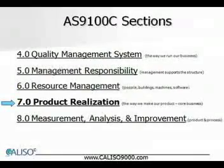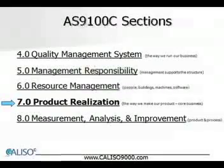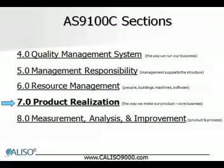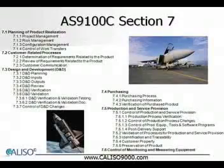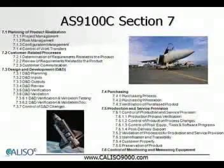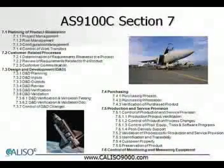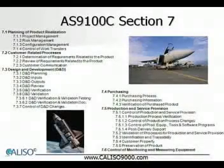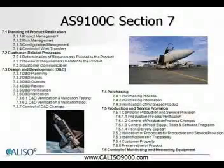Section 7 is titled Product Realization. Product Realization is a term used to describe the process for realizing the product — or, to make it even easier to understand, it's how we make our product. Understandably, this section contains the bulk of the requirements. This slide lists the titles for the six clauses and 28 sub-clauses found in Section 7. There are way too many specific requirements to cover in this brief introductory video; we encourage you to take our full-length AS9100C training course at www.caliso9000.com. Because this section is focused on product realization activities specific to aviation, space, and defense, it has the most additional requirements over and above the ISO 9001-2008 standard.